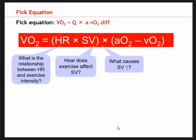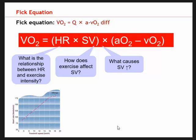Pause the video again to answer the next set of questions. What is the relationship between heart rate and exercise intensity? There's a positive linear relationship — as treadmill speed increases, heart rate increases all the way up to maximum. If you just keep running faster and faster, heart rate does the same. We already said that maximal heart rate is not influenced by training; it's influenced by age. Our age determines where that max heart rate will level off.